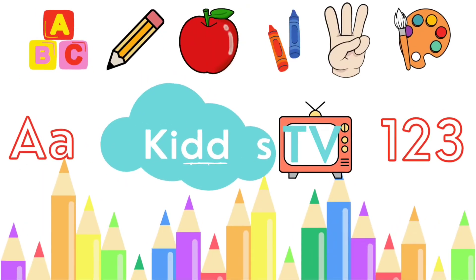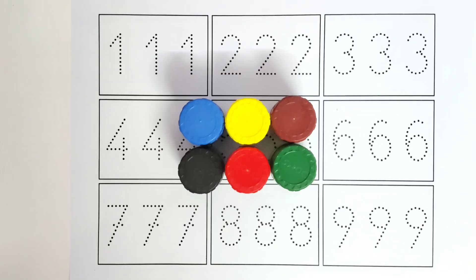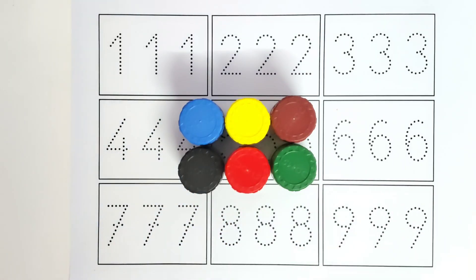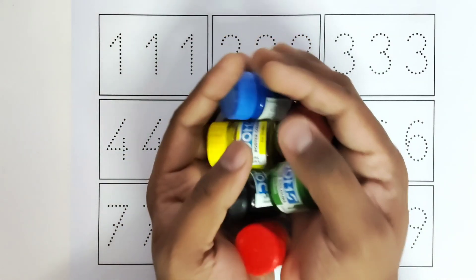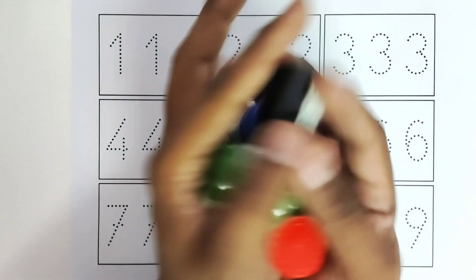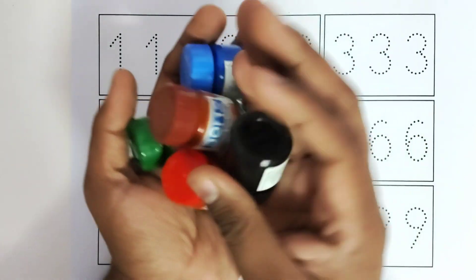Hello kids, welcome to Kiddos TV. Today we are going to learn the numbers. We will be tracing from 1 to 9. Let us get started. We will be doing the color names. We have so many colors. We will know them.